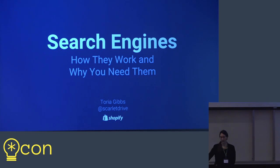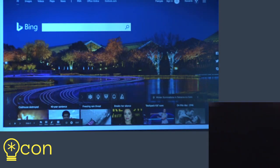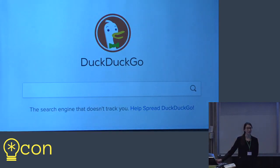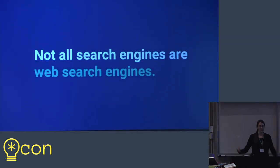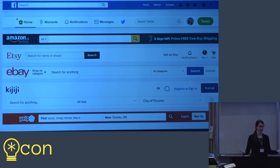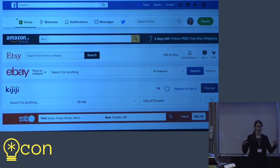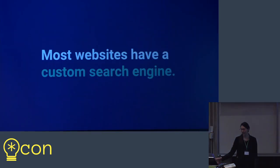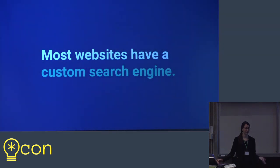Probably when you think about search engines, you're picturing something like Google or similar web search engines. But those are all web search engines — what they make searchable and available to you is the entire Internet. Not all search engines are web search engines. Pretty much every website or app you go to which has sufficiently large amounts of data needs to make that data searchable. Etsy, Yelp — they all have their own search bars. That's not calling out to some Google API. They've implemented their own custom search. I would argue that probably most apps or websites have a custom search engine.